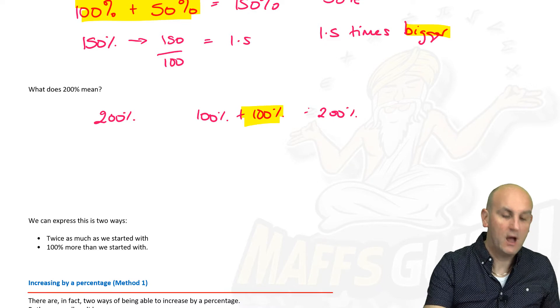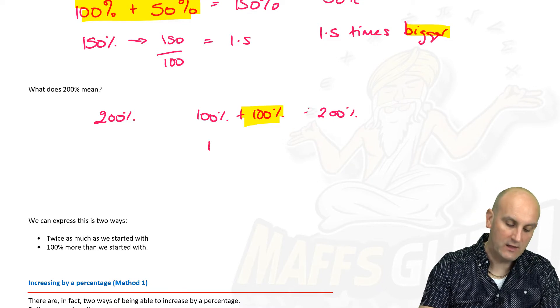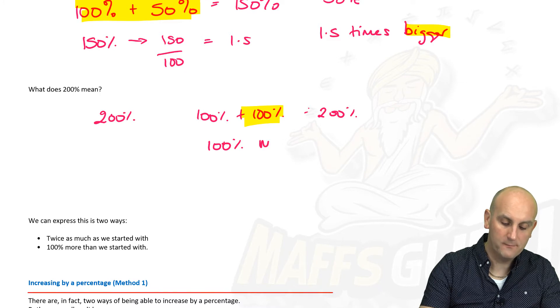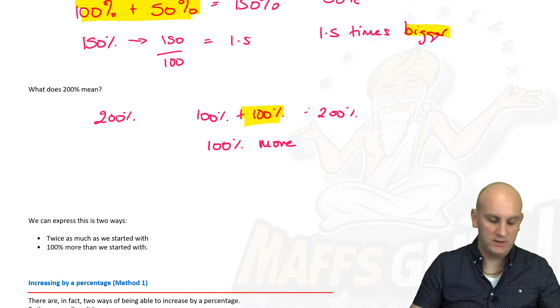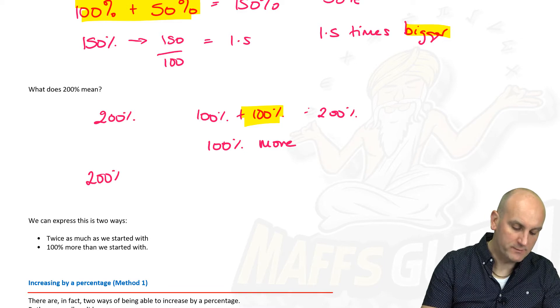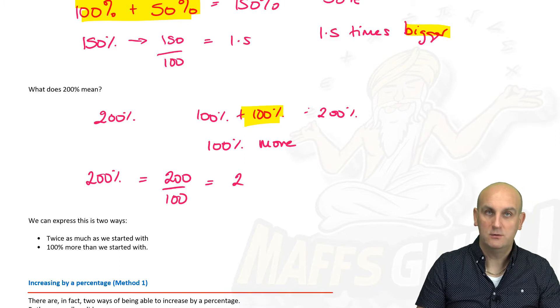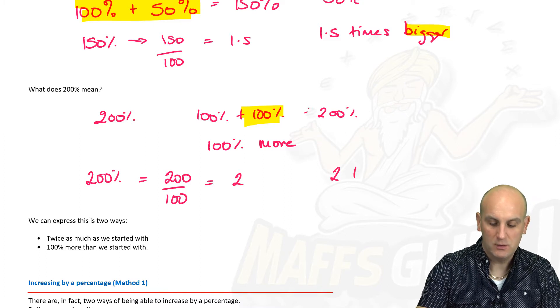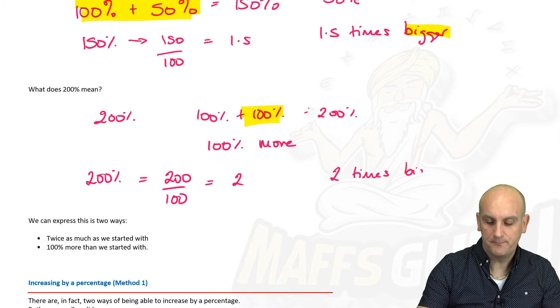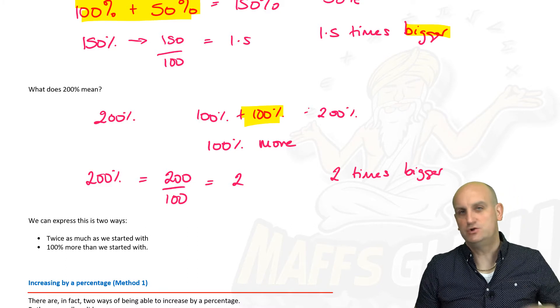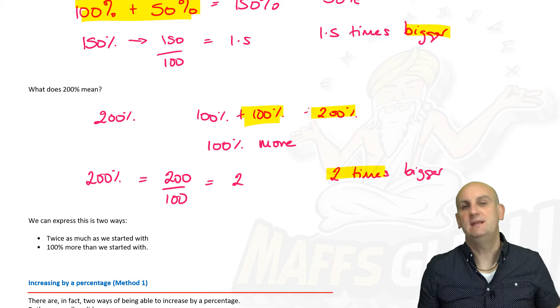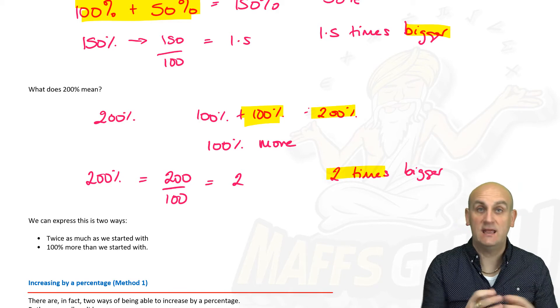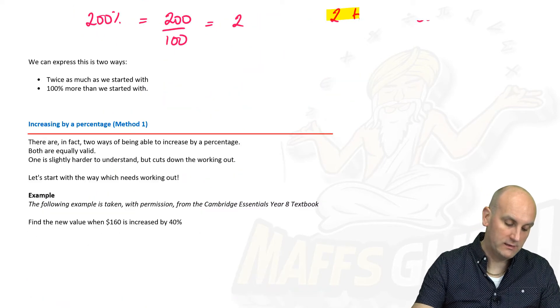So what does it mean? Well, it now means, because of the 100% we've added, I now have 100% more. I've got 100% more than I started with. But we also know that 200% is the same as 200 divided by 100, which is 2, otherwise known as 2 times bigger. So 200% and 2 times bigger mean exactly the same thing. And that's the language we can start to use to apply to maths.